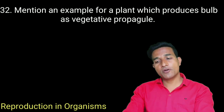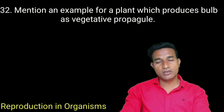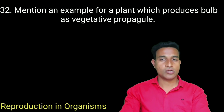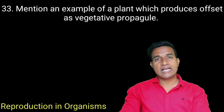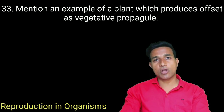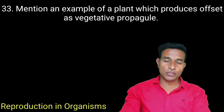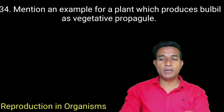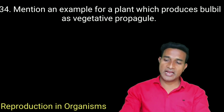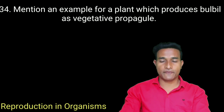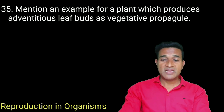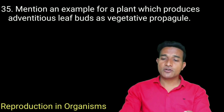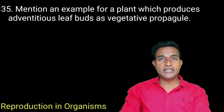Mention an example for a plant which produces offset as a vegetative propagule — water hyacinth. Mention an example for a plant which produces leaf buds as a vegetative propagule — agave. Mention an example for a plant which produces adventitious leaf buds — Bryophyllum.